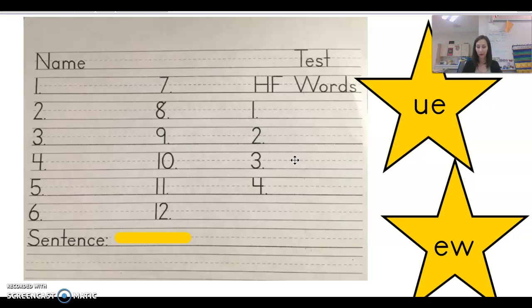All right. That is our week 31 spelling. Sentence one more time before we wrap up. He drew a blue clue. All right. Thanks for your hard work and keep up the great work. I will talk to everybody soon. Bye!